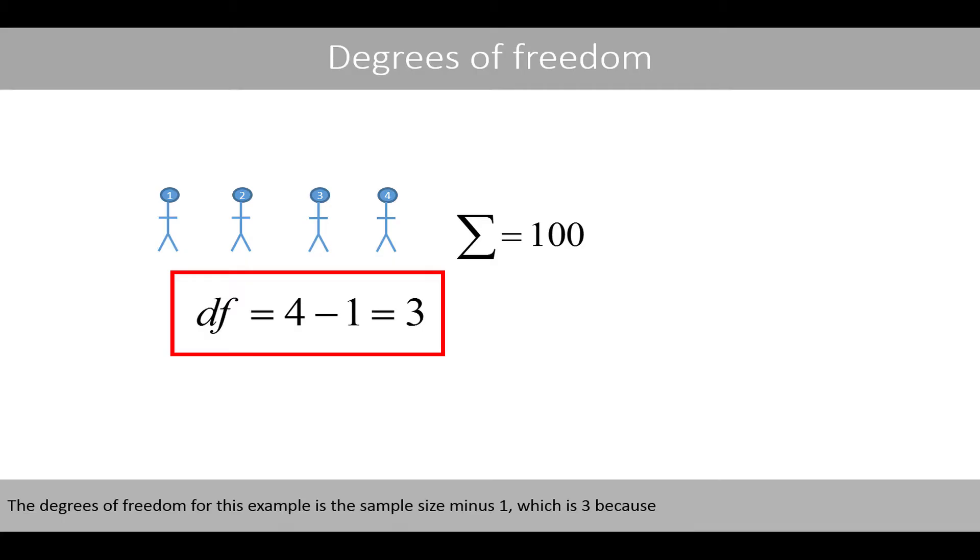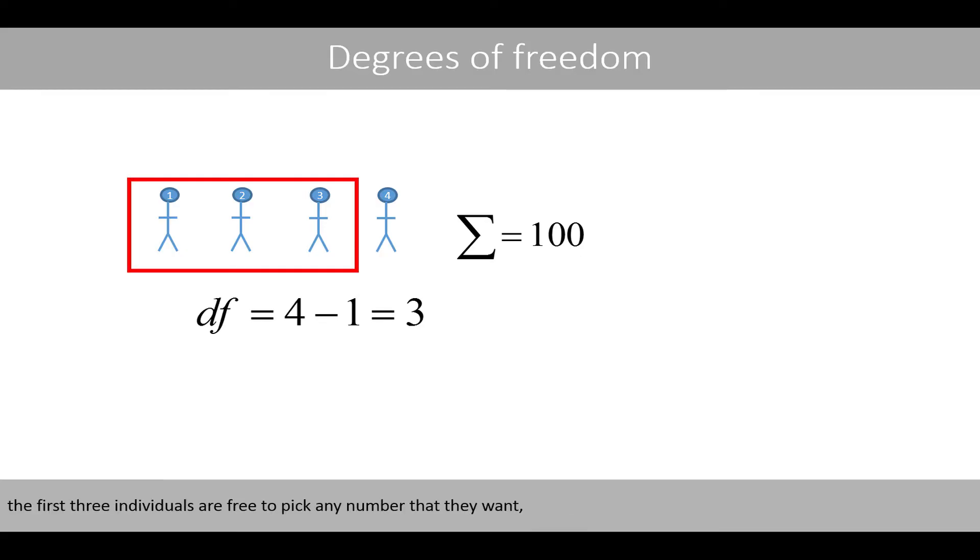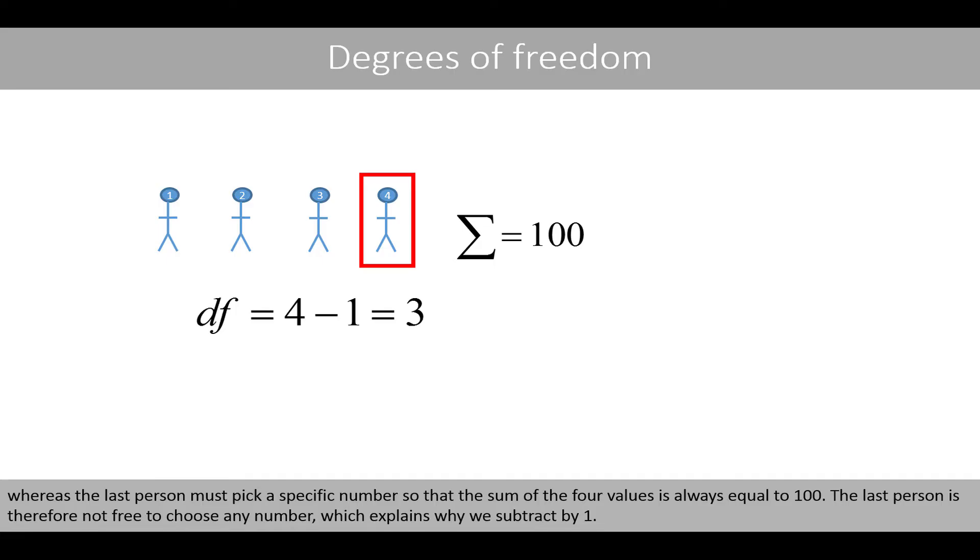The degrees of freedom for this example is the sample size minus 1, which is 3, because the first three individuals are free to pick any number that they want, whereas the last person must pick a specific number so that the sum of the four values is always equal to 100. The last person is therefore not free to choose any number, which explains why we subtract by 1.